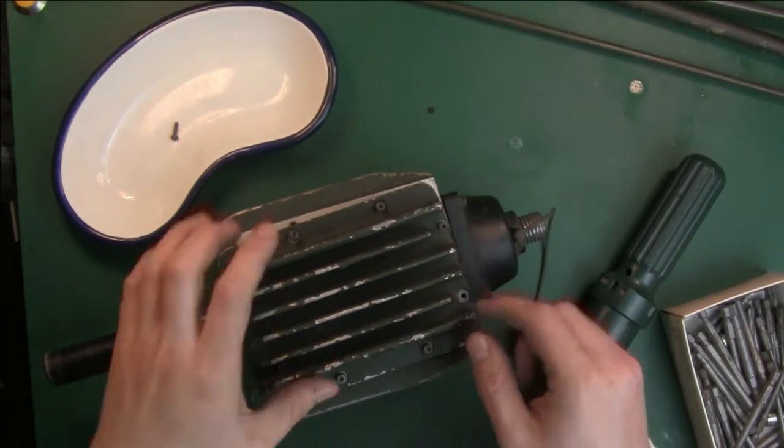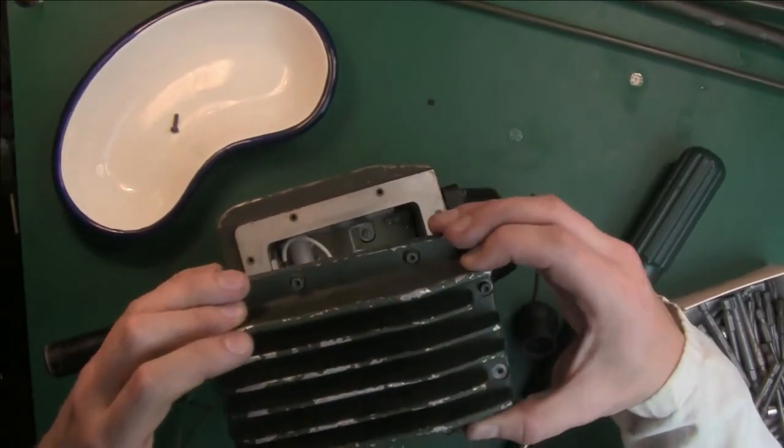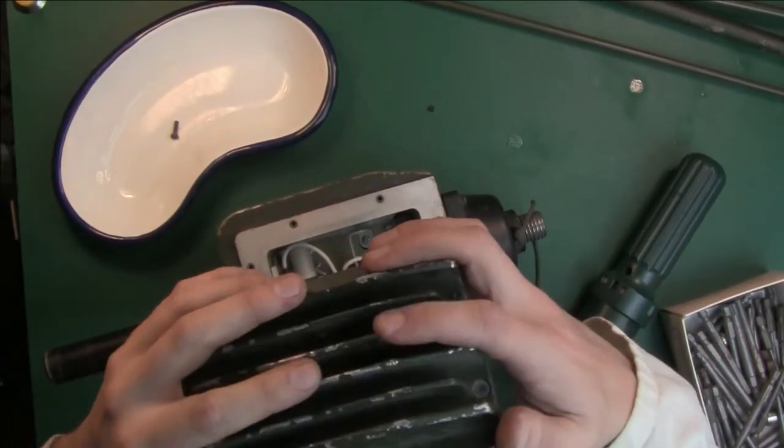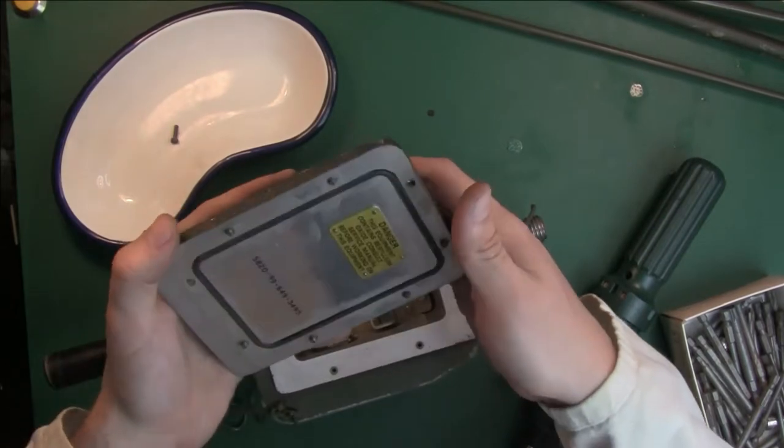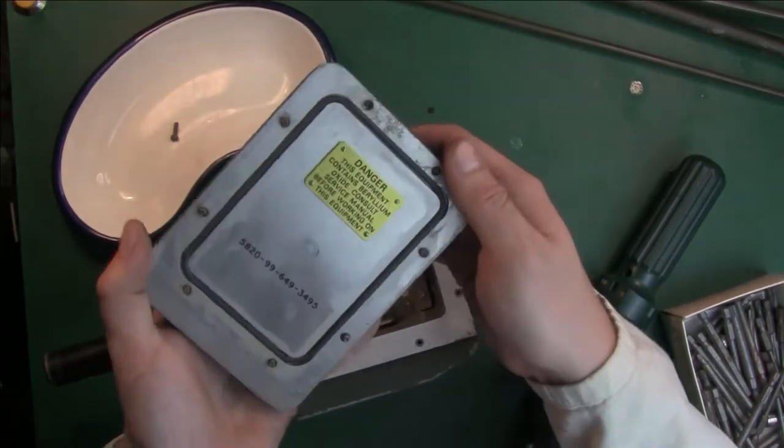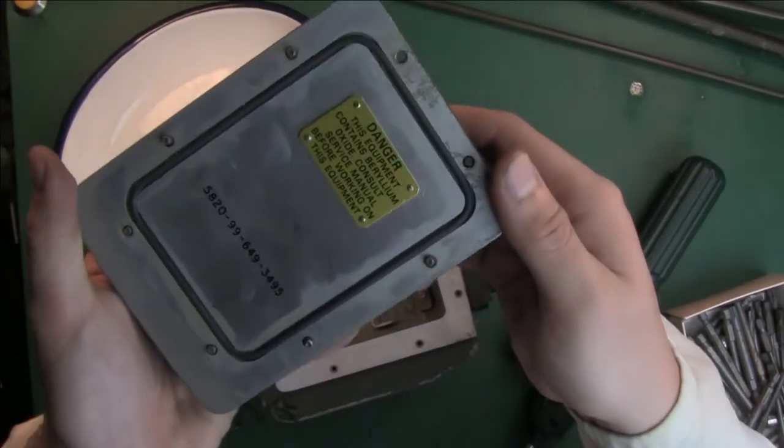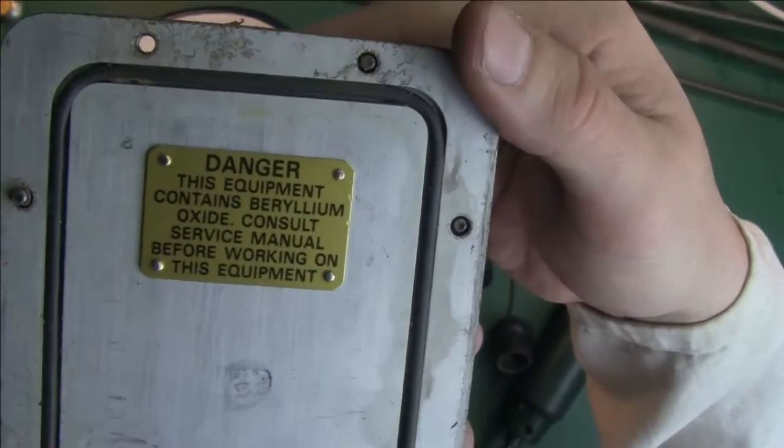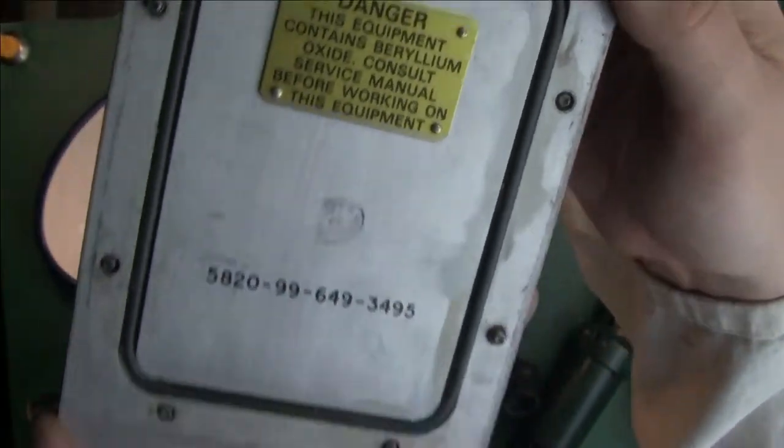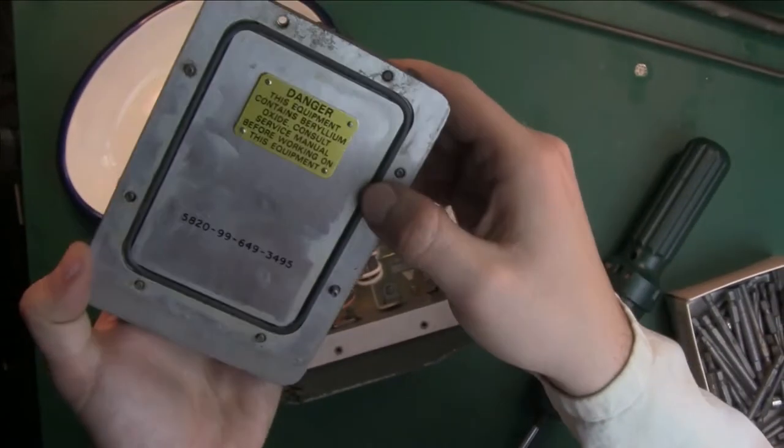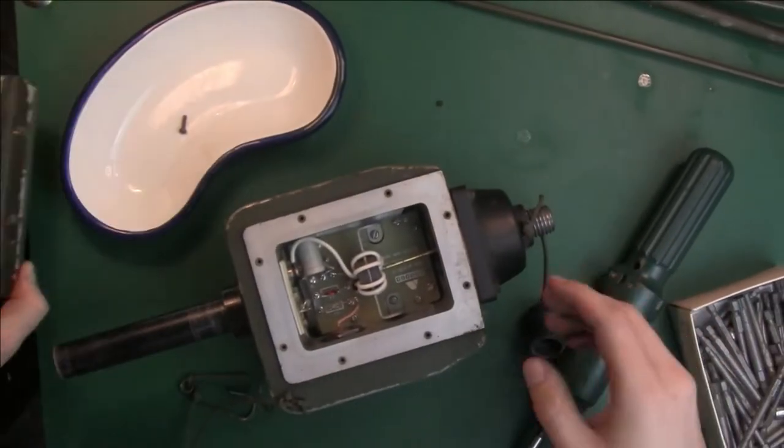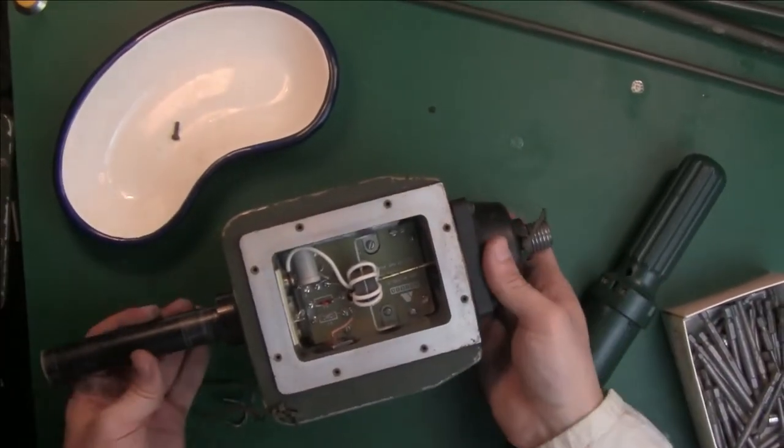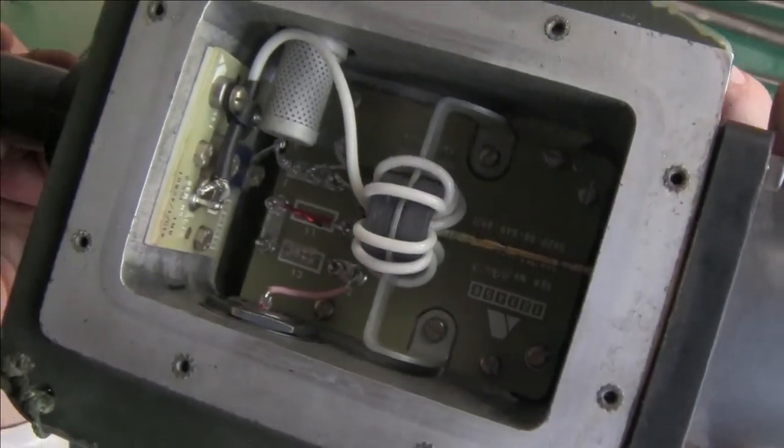Okay, so I removed all the screws and when we open, we got information about the beryllium oxide, just like I told you. We got our rubber seal and that's what we can find inside.